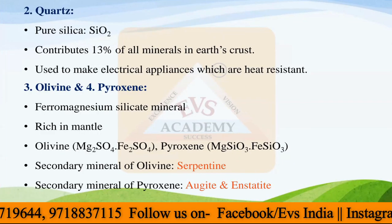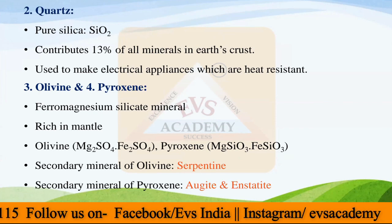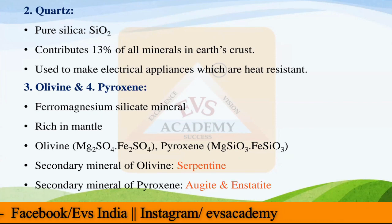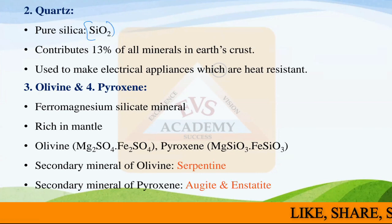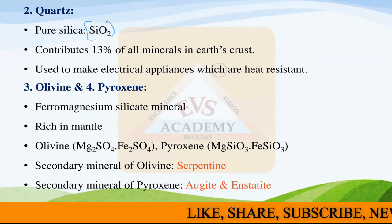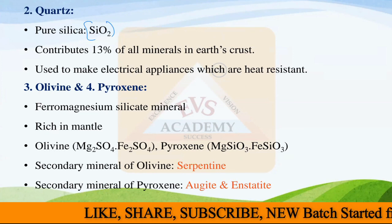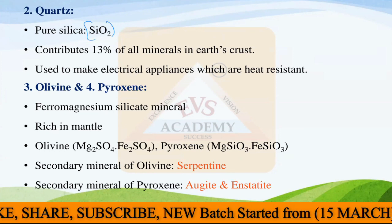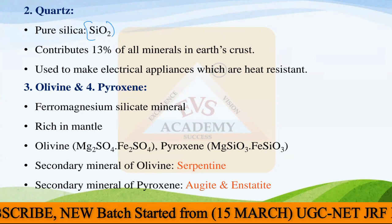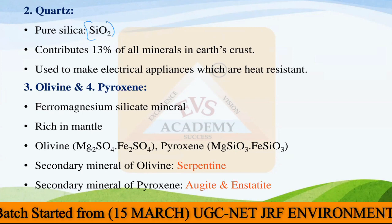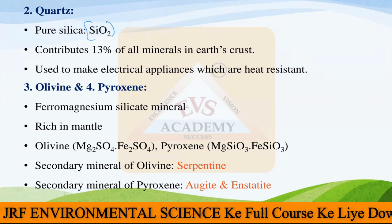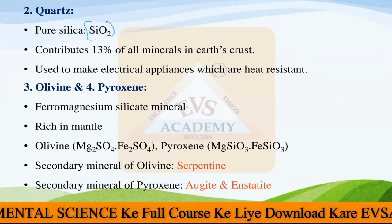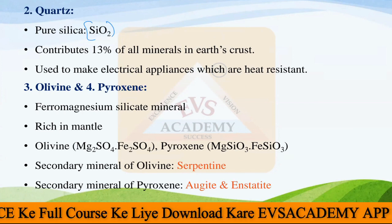The next mineral is quartz, the second most dominant type found in the earth's crust. Quartz is silicon oxide, SiO2, and contributes almost 13% of all minerals in the earth's crust. It is used to make electrical appliances that are heat-resistant, because quartz has the property of heat resistance.